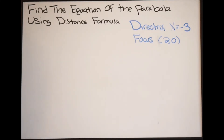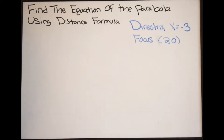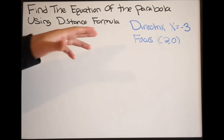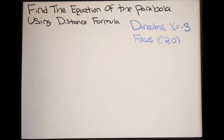In this example, we're being asked to find the equation of the parabola using the distance formula. We are given some information: the directrix, which is x equals negative 3, and we're given the focus.